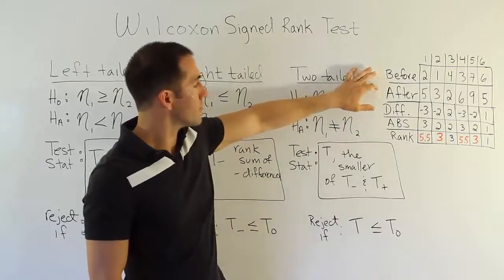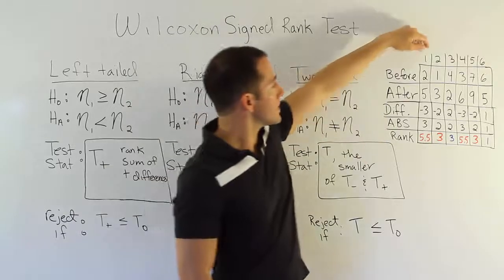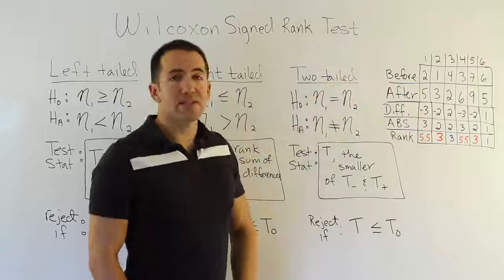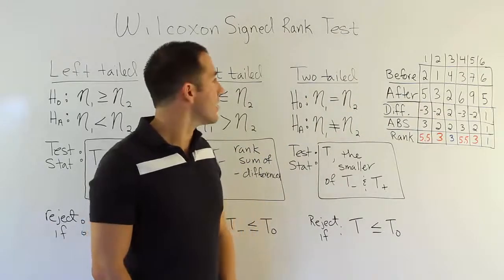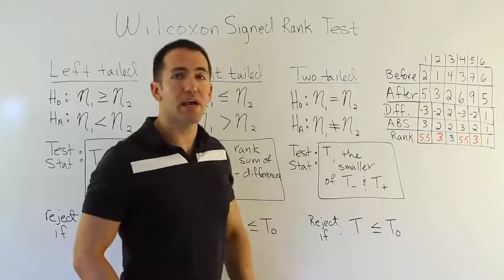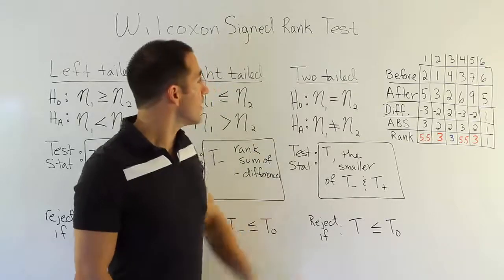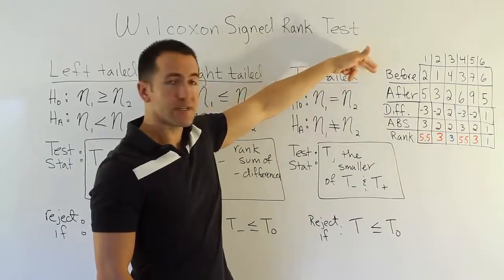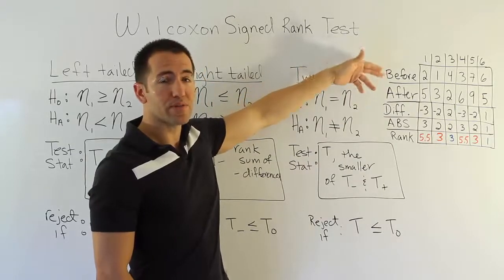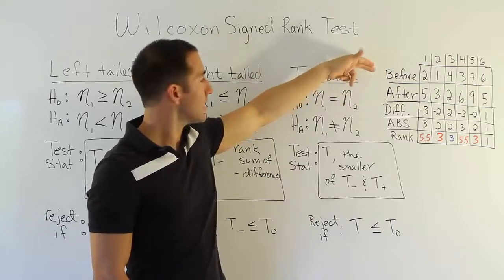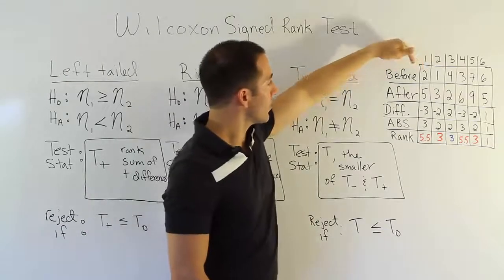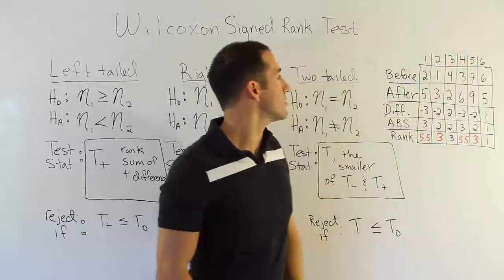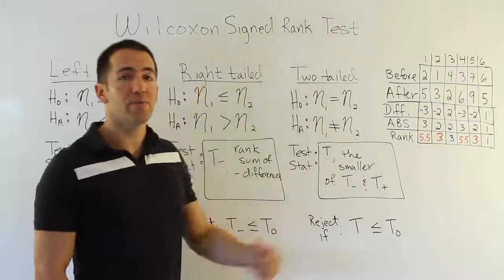Usually you have a before and after row, and we have different subjects. In this case, I have subjects 1, 2, 3, 4, 5, 6. This data is made up, but let's just imagine that it's a high school gym class, and the PE teacher is going to give them an exercise routine to help them do pull-ups.